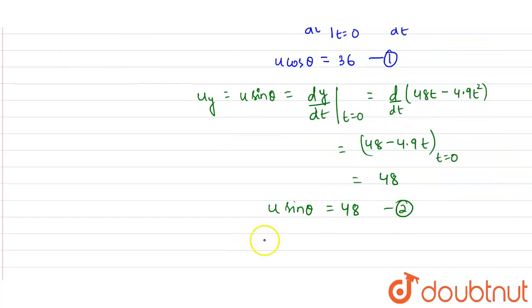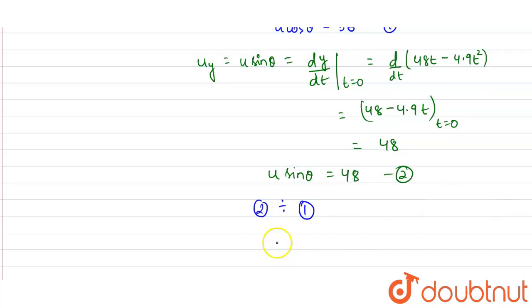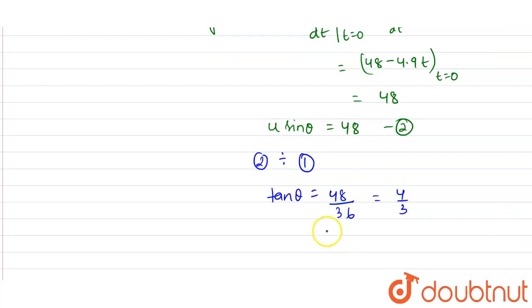Now dividing equation 2 by equation 1, we get tan θ equals 48 upon 36. From here we get 4 by 3, so tan θ comes out to be 4 by 3.